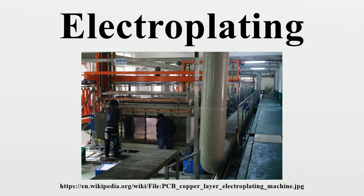Typical stop-offs include tape, foil, lacquers, and waxes. A special plating deposit called a strike or flash may be used to form a very thin plating with high quality and good adherence to the substrate. This serves as a foundation for subsequent plating processes. A strike uses a high current density and a bath with a low ion concentration. The process is slow, so more efficient plating processes are used once the desired strike thickness is obtained.